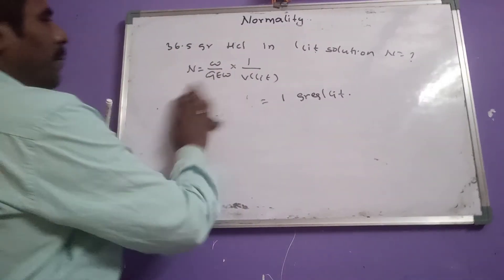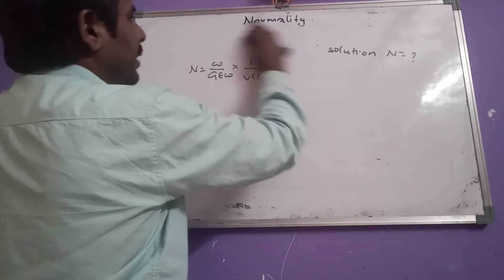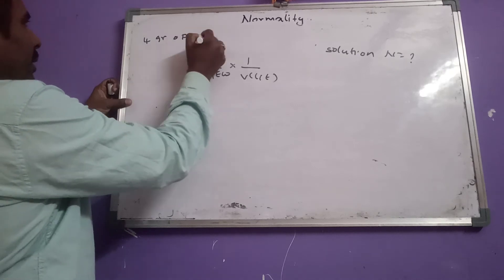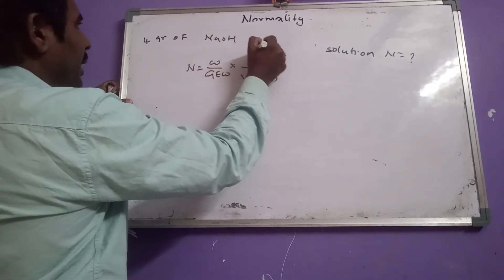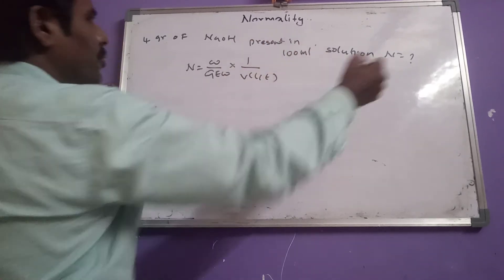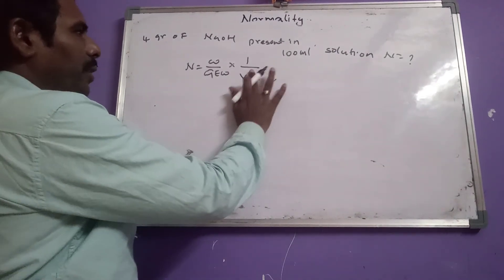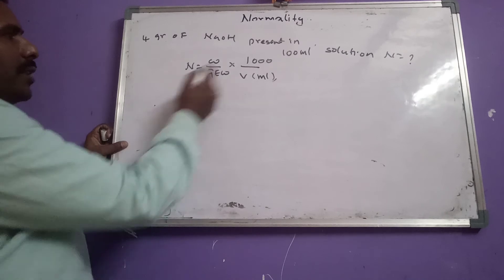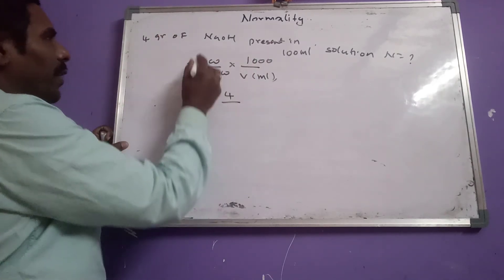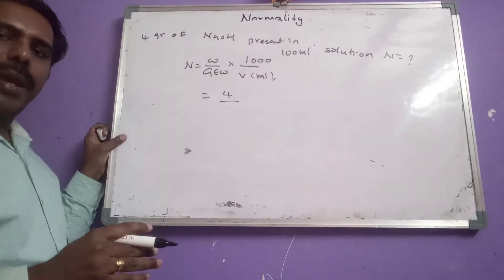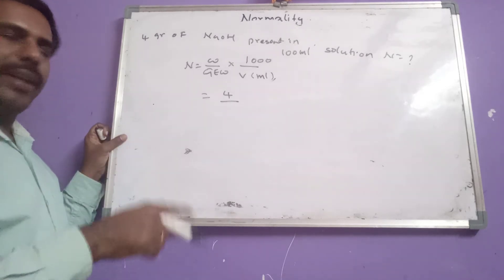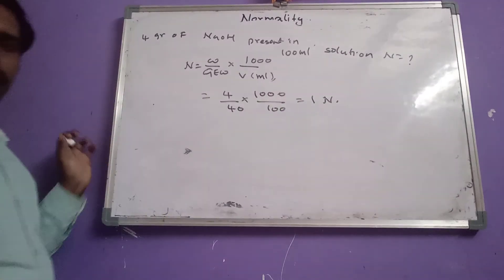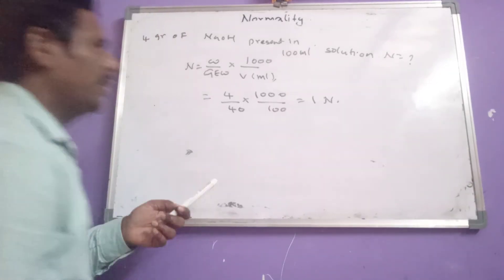Another problem: 4 grams of NaOH present in 100 mL of solution. What is its normality? Since volume is given in milliliters, we use the formula: normality equals weight divided by gram equivalent weight, multiplied by 1000 divided by volume in mL. NaOH is a monoacidic base, so gram molecular weight equals gram equivalent weight (40). So normality equals 4 divided by 40, multiplied by 1000 divided by 100, giving 1N.